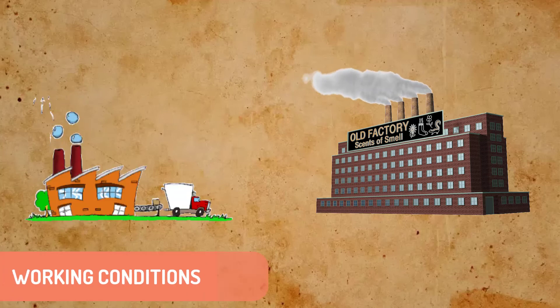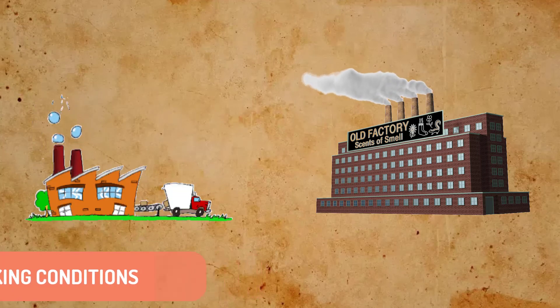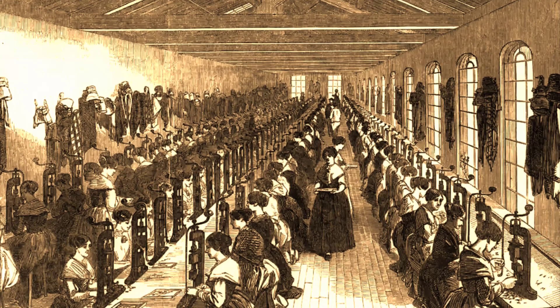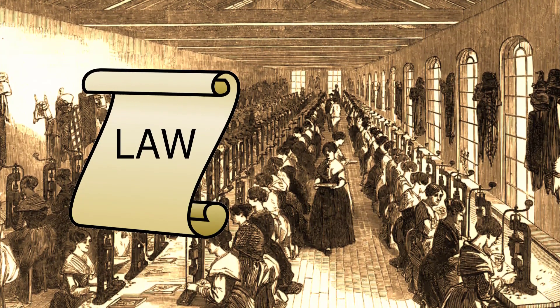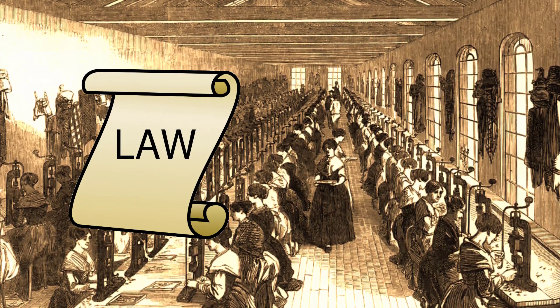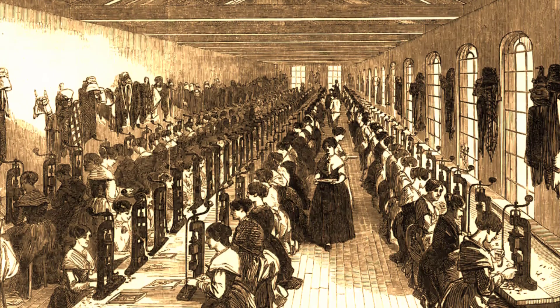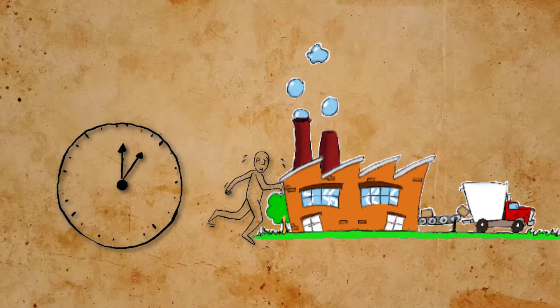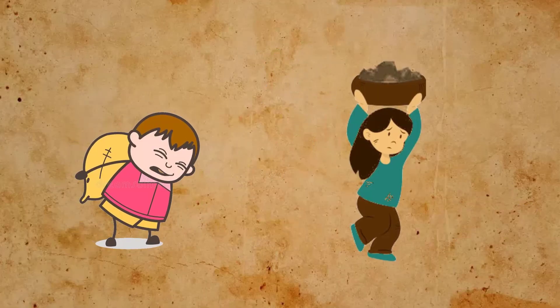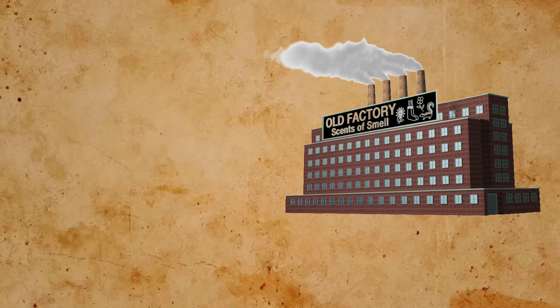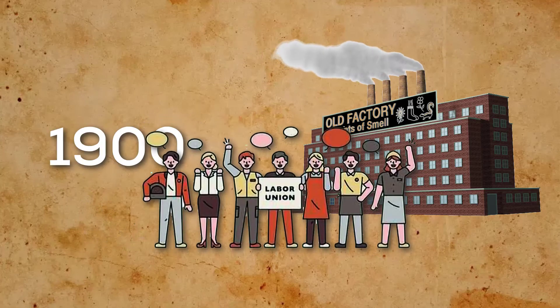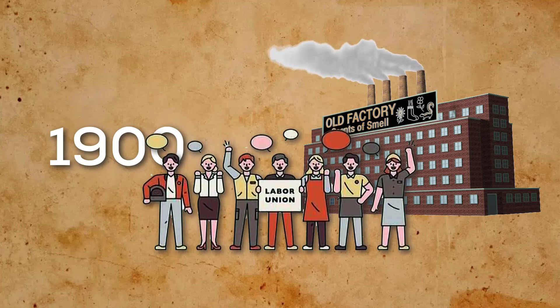One drawback of the Industrial Revolution was poor working conditions for people in factories. There were few laws to protect workers at the time, and working conditions were often dangerous. People often had to work long hours, and child labor was a common practice. By the end of the 1900s, labor unions and new laws began to create a safer working environment.